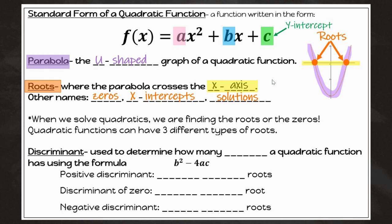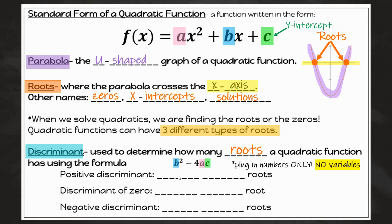When we solve quadratics, we are finding the roots or the zeros. Quadratic functions can have three different types of roots. In order to find out what type of root it has, we're going to use the discriminant formula. The discriminant formula is used to determine how many roots a quadratic function has using the formula b squared minus 4ac. We're keeping in mind that we're only going to plug in the numbers. We're not plugging in the variables. Some students in the past have tried to put in variables into this formula, but this formula just is the numbers, not the variable.